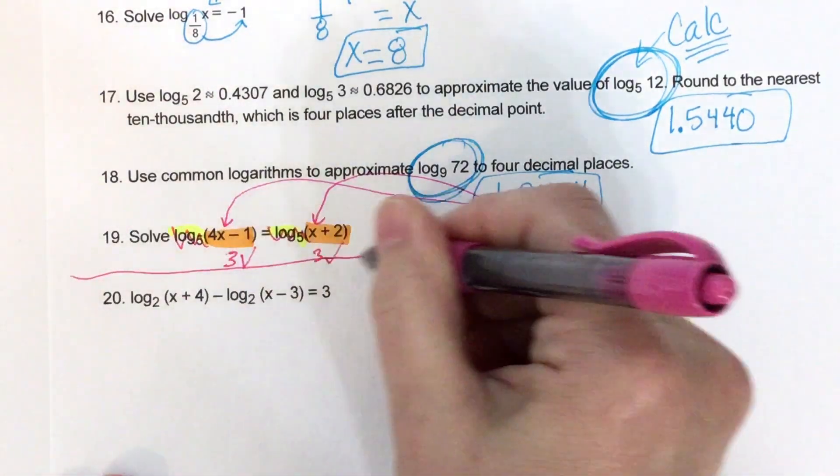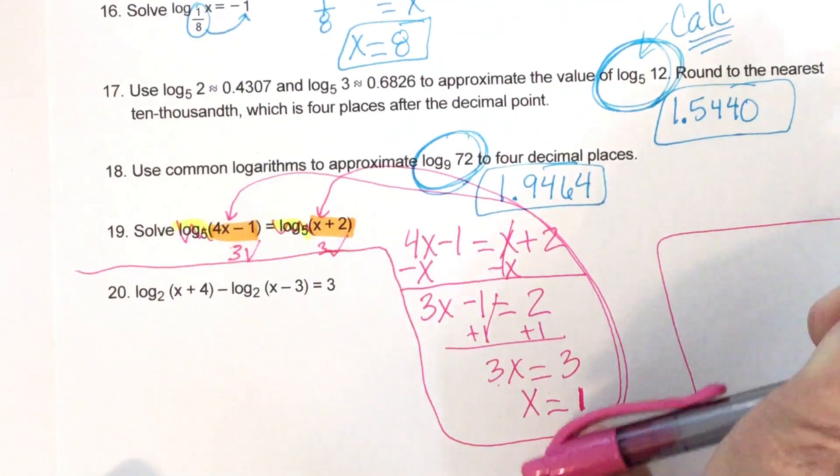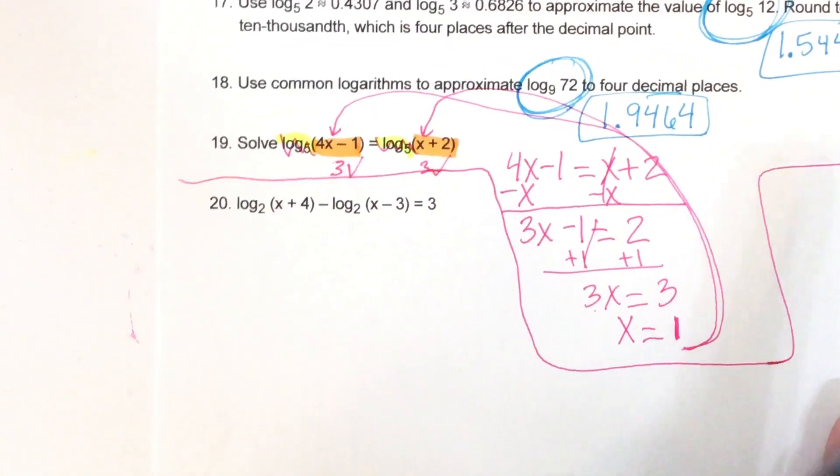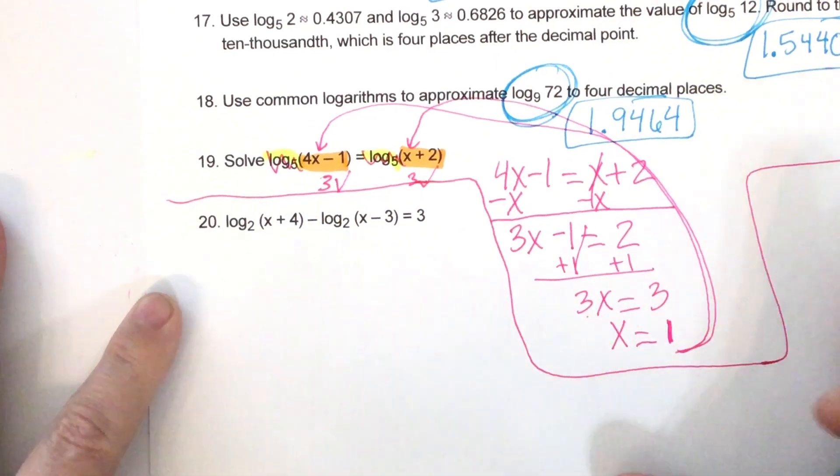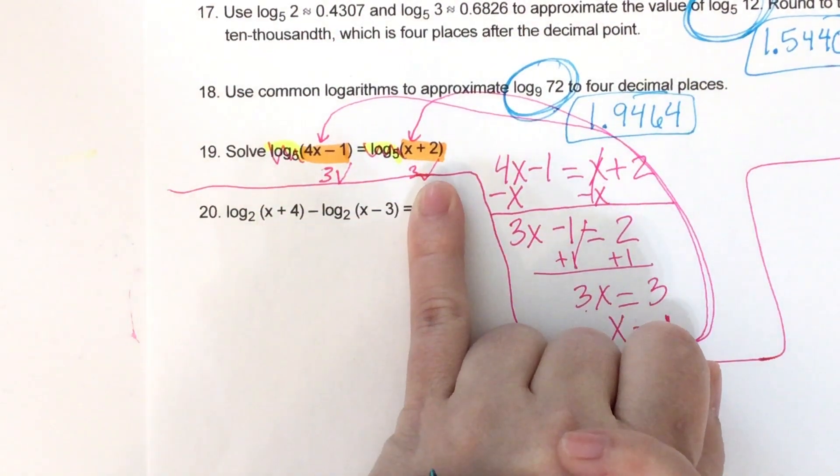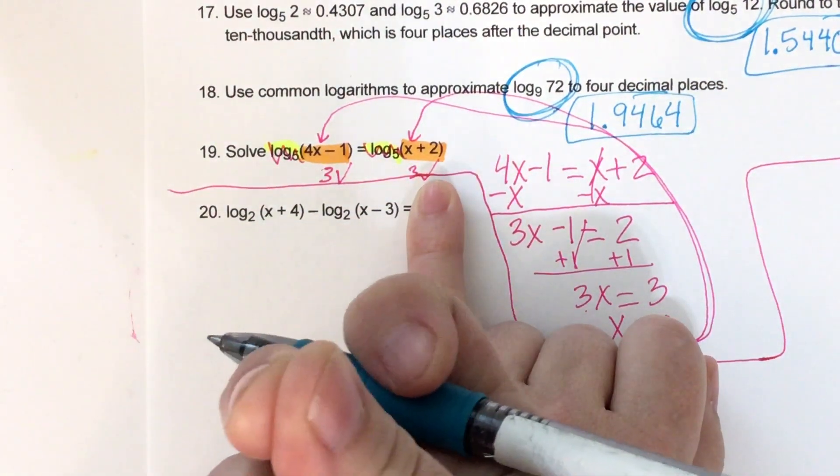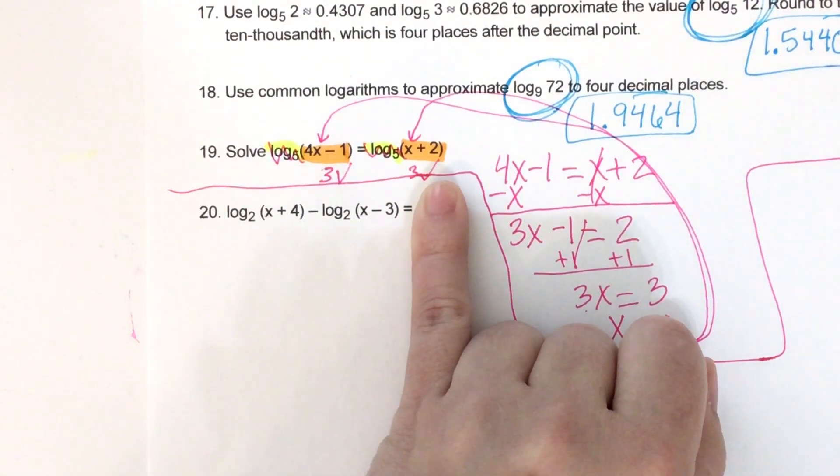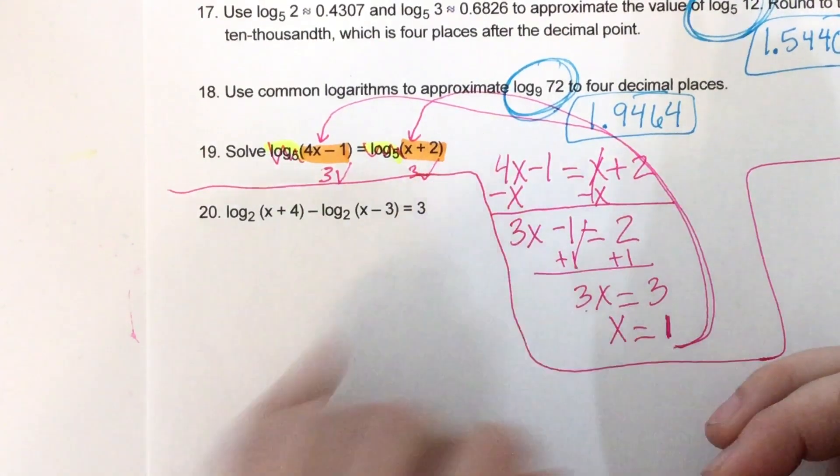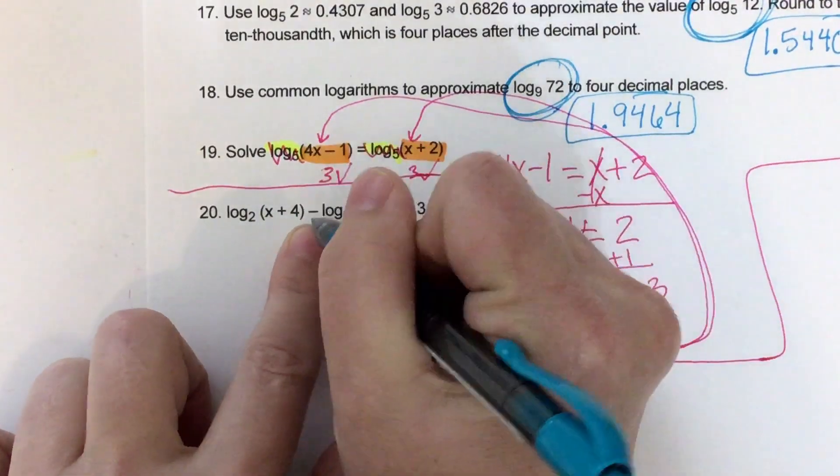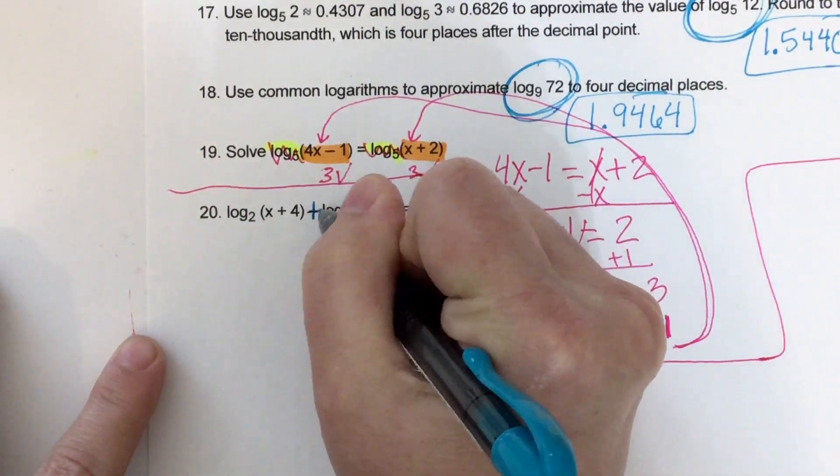Okay. And last last problem. Number 12, or 20, sorry. Okay. So when you see log more than once on one side of the equals, you need to condense it so you only see log once. So this is when we have to follow our rules. And I really think that this is a typo. I really think that this is supposed to be an addition sign. So I'm going to change it to an addition sign right now.